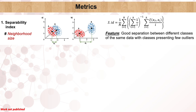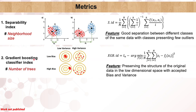We developed five metrics with five different features to measure the performance of the dimension-reducing method for good visualization. The first, denoted as the separability index, evaluates how far apart the clusters of the same data are from each other. It also assesses the outliers of clusters in terms of the neighborhood size. The second, called the gradient boosting classifier index, evaluates the balance of bias and variance in the reduced data in terms of the number of trees. It also assesses how well the structure of the original data is preserved.